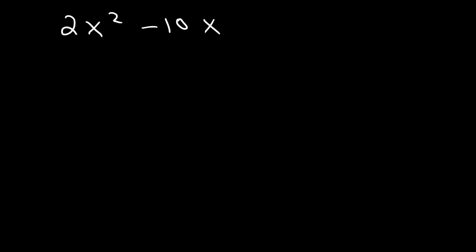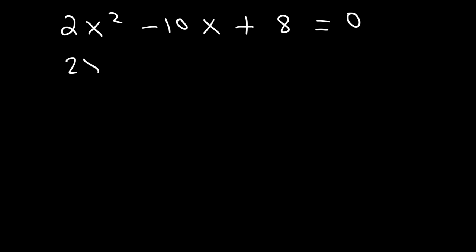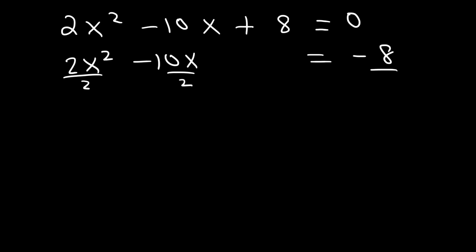So now let's move on to the next problem. Sometimes you may have a leading coefficient that's not 1 — in this case it's a 2. Let's follow the same steps. Let's move the 8 to the other side first. So this is 2x squared minus 10x, leave a space, and that's equal to negative 8. Now what I want you to do is get rid of this 2, so we're going to divide everything by 2. So x squared minus 5x equals negative 4.